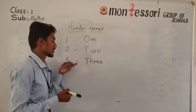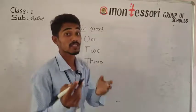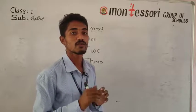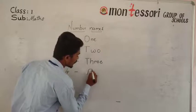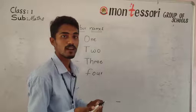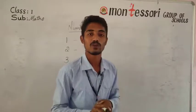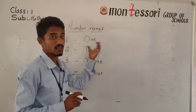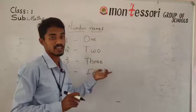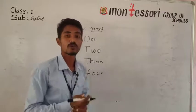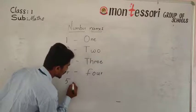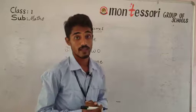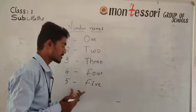After three comes four. The spelling of four is F-O-U-R. Number name of four is F-O-U-R. So: one is O-N-E, two is T-W-O, three is T-H-R-E-E, four is F-O-U-R. After four comes five. The spelling of five is F-I-V-E. Number name of five is F-I-V-E.